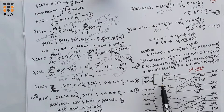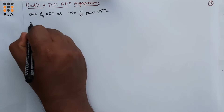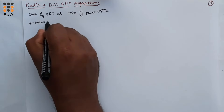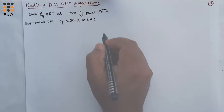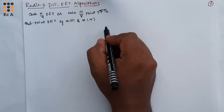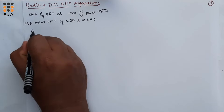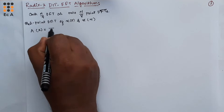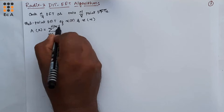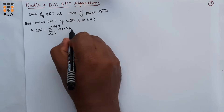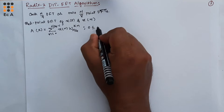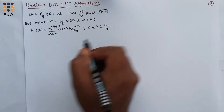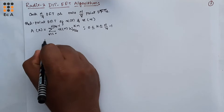For this, let us consider the 2-point DFT which has x(0) and x(4). The 2-point DFT of x(0) and x(4) can be represented as A(k) equal to summation of n from 0 to N/4 minus 1 of x(n) times W_{N/4}^{kn}, for k ranging from 0 to N/4 minus 1. In our example, we have taken N equal to 8.